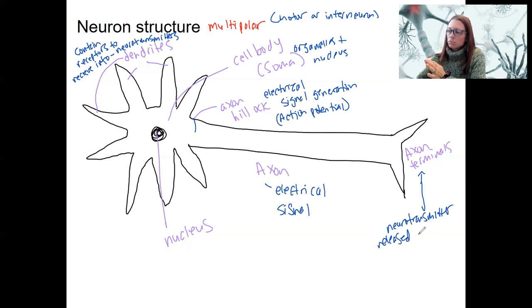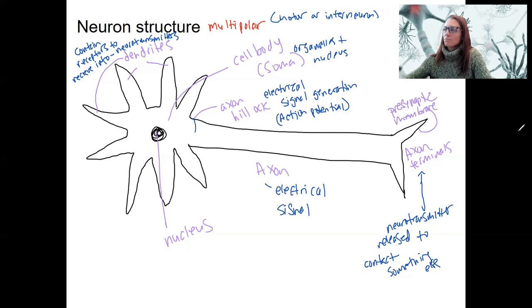To contact something else. What else? Another neuron, skeletal muscle, smooth muscle, depending on what this neuron is. This area here, one more term, this membrane is the presynaptic membrane. Because if we had another neuron over here, that would be the postsynaptic membrane.